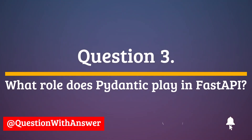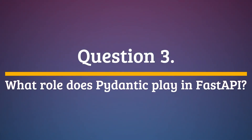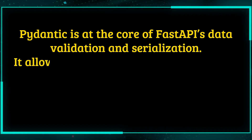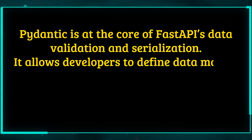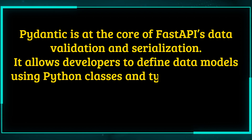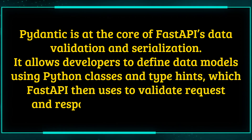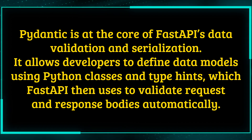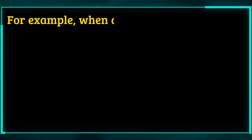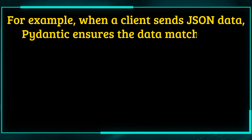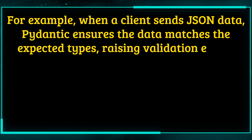Question 3: What role does Pydantic play in FastAPI? Pydantic is at the core of FastAPI's data validation and serialization. It allows developers to define data models using Python classes and type hints, which FastAPI then uses to validate request and response bodies automatically. When a client sends JSON data, Pydantic ensures the data matches the expected types, raising validation errors if not.